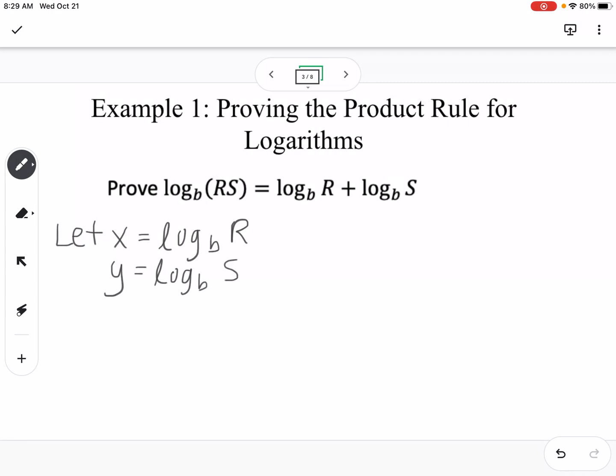So we can rewrite both of these in exponential form. So that would be B to the x power equals R and B to the y power equals S. So that's just rearranging switching forms back to exponential.